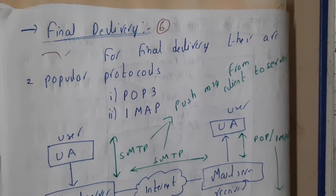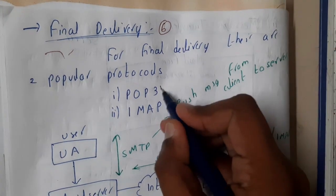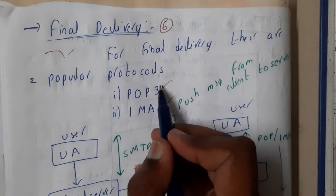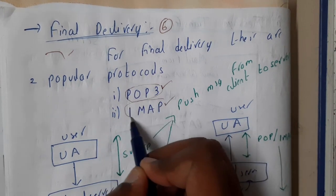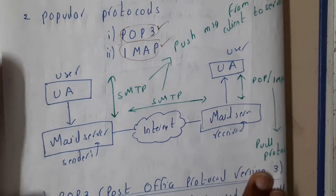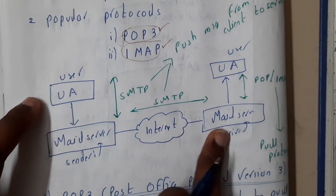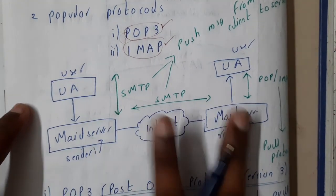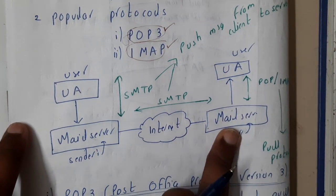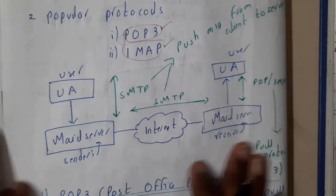In this lecture, let us go through final delivery — how the delivery of mail is done. We'll be discussing POP3 and IMAP, the two protocols used for mail retrieval. We discussed a similar diagram in the previous lecture: the sender and receiver user agents, where sending to the receiver's mail server uses a two-step SMTP process, and retrieving from the receiver's mail server to the receiver uses POP3 or IMAP.